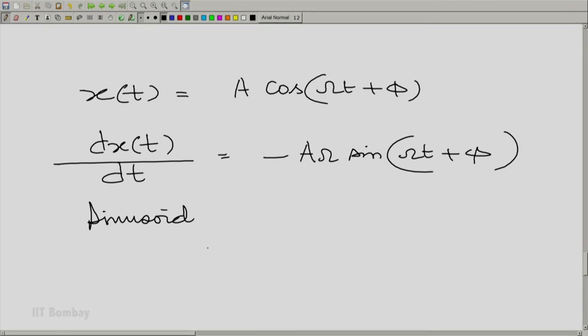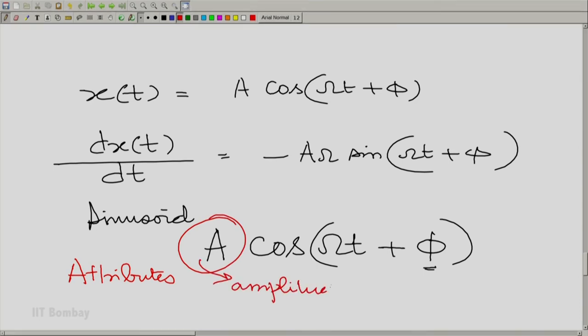So let us identify that. A sinusoid, a typical sinusoid looks like this. You know the cos or the sine does not really matter. It does not matter whether I write cos(Ωt + φ) or sin(Ωt + φ). It is essentially a matter of a different angle here. But what does matter is the other three attributes: the amplitude, the phase, and the angular frequency.